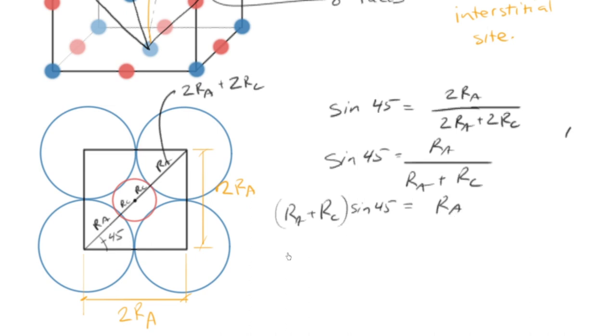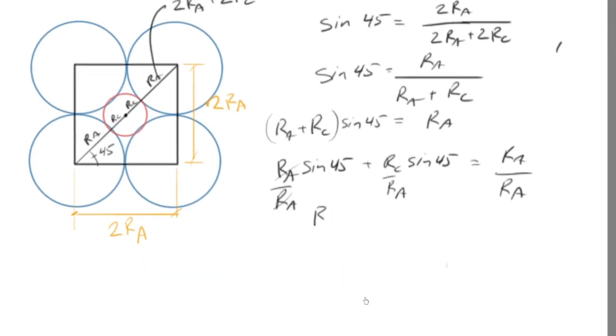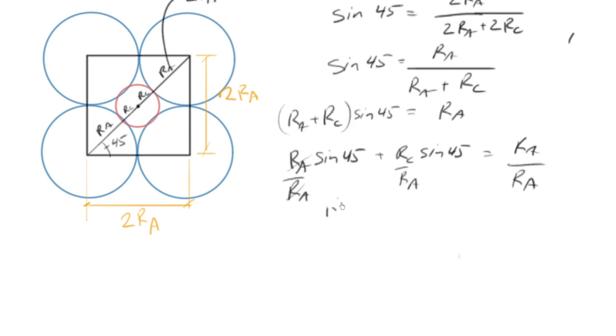And let me get back to this. So now what we need to do is we need to factor this out. Ra sine 45 plus rc sine 45 equals ra. And what we'll do is we'll just divide both sides by ra. So that clears out nicely. And there we have our result, rc over ra. So that's all we need to solve for. Rc over ra, see if you can figure this out before I do, is going to be equal to 1 minus sine 45 over sine 45.